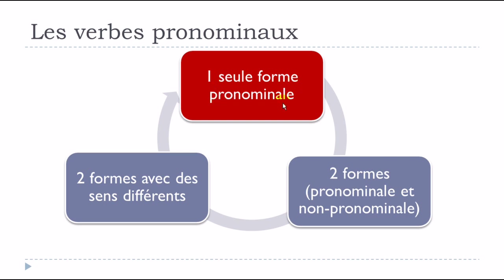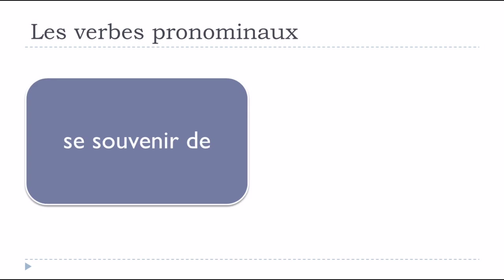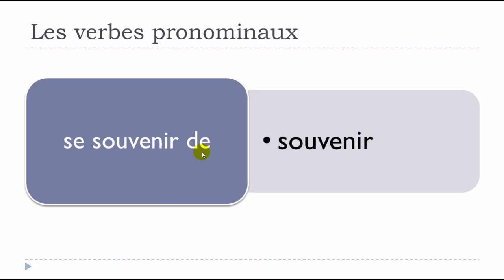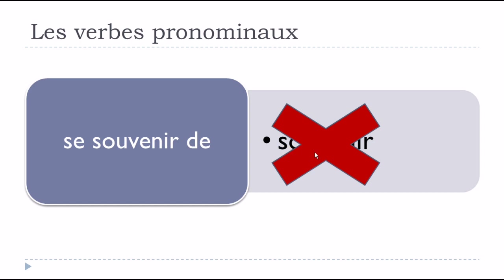Let's start with the situation where we have only one form - la forme pronominal. For example, the verb se souvenir de. Many students make the mistake of using souvenir without se, wanting it to be non-pronominal. Unfortunately, souvenir without se doesn't exist - you have to use it with se, in la forme pronominal.